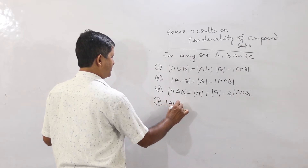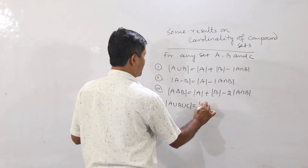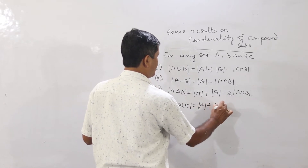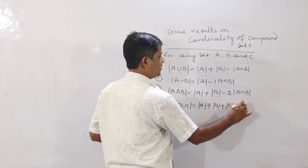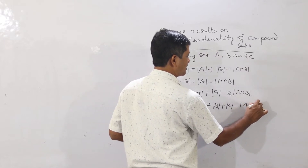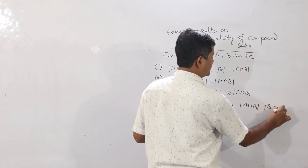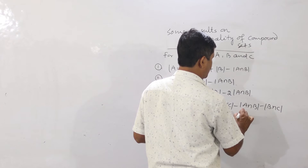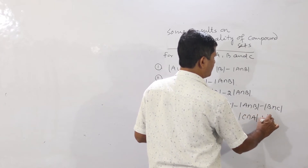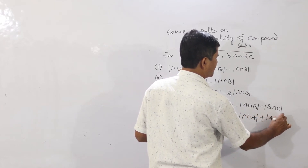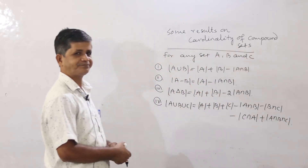Fourth result: the cardinality of A union B union C equals cardinality of A plus cardinality of B plus cardinality of C minus cardinality of A intersection B minus cardinality of B intersection C minus cardinality of C intersection A plus cardinality of A intersection B intersection C.